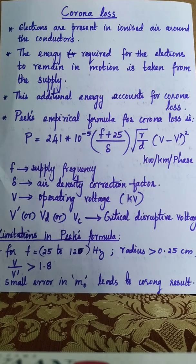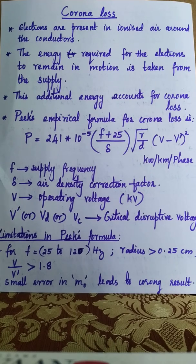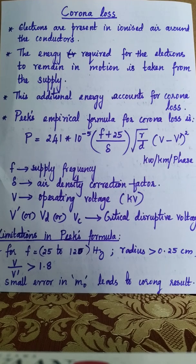In today's lecture, we will discuss the coronal loss as well as the factors affecting it. As we all know, there are free electrons present in the air surrounding the conductors. The velocity with which these electrons move is not sufficient to dislodge electrons from other air molecules, so they need extra velocity to strike other air molecules. This extra velocity is taken from the supply voltage, and this additional energy accounts for the coronal loss.